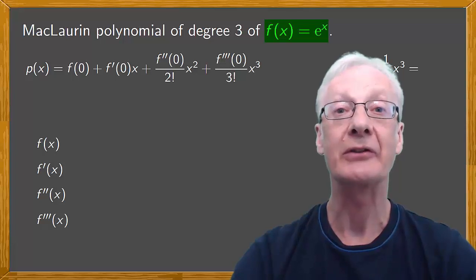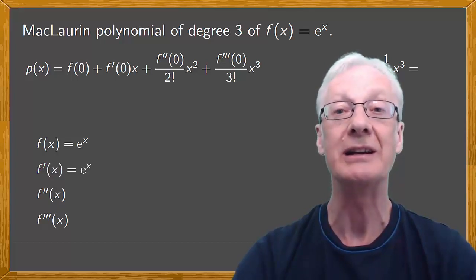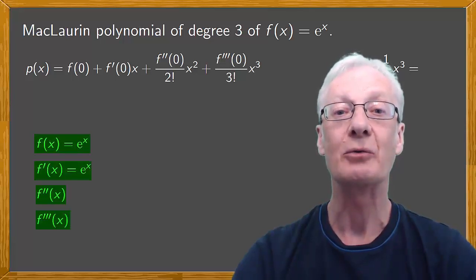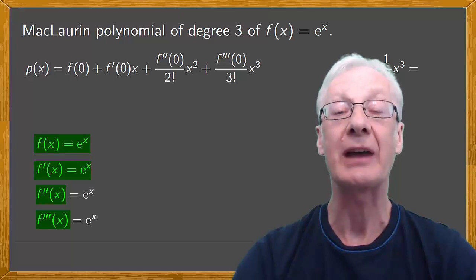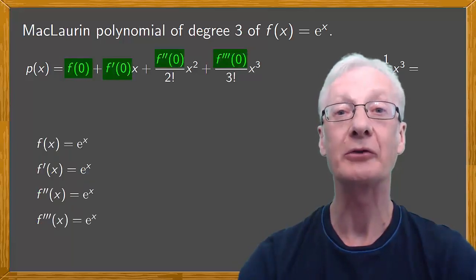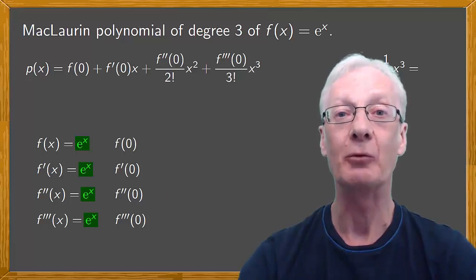Since f(x) is e to the x, f'(x), the derivative of e to the x, is also equal to e to the x in fact. However many times we differentiate e to the x, the result is always the same. So we also have e to the x for the second and third derivatives. Now we substitute x equals 0 in the image and the derivatives. Putting x equal to 0 in e to the x, we always obtain 1.